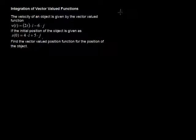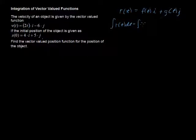If we have a vector-valued function r of t equals some function f of t times i, that's in the horizontal direction, plus some function g of t times j, that's in the vertical direction, then the integral of that, the integral of the vector-valued function with respect to t, would be the integral of the function f with respect to t, and then times i.